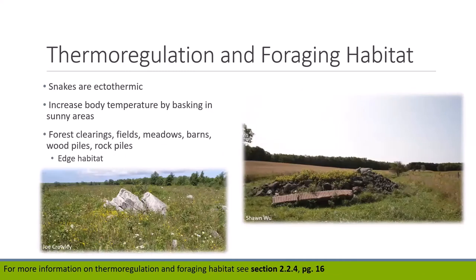Snakes are ectothermic and their body temperature fluctuates with the ambient environment, so they alter their behavior and habitat use to regulate body temperature by basking in sunny areas. They do not require large open habitats for basking — they are typically near retreat sites that provide shelter from extreme temperatures and protection from predation. Rock piles along field edges are great for snakes: rocks picked up from fields to protect farm equipment can be placed along the field edge. Other basking structures include forest edge, meadows, retaining walls, barns, wood piles, cement slabs, plywood, and other forms of debris.